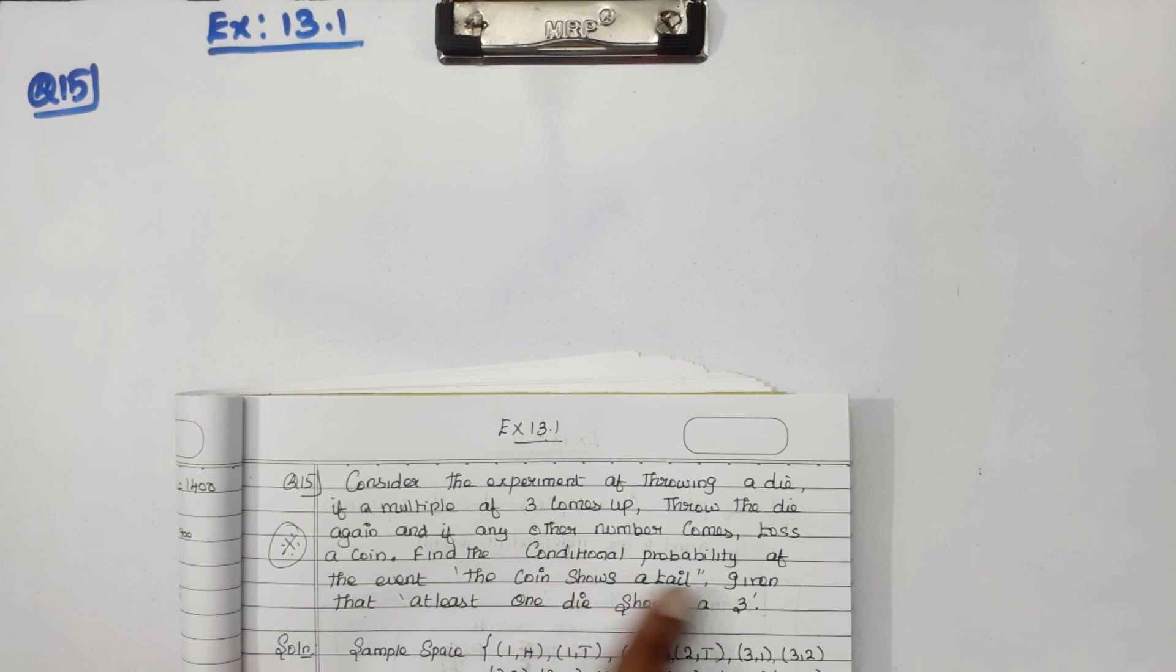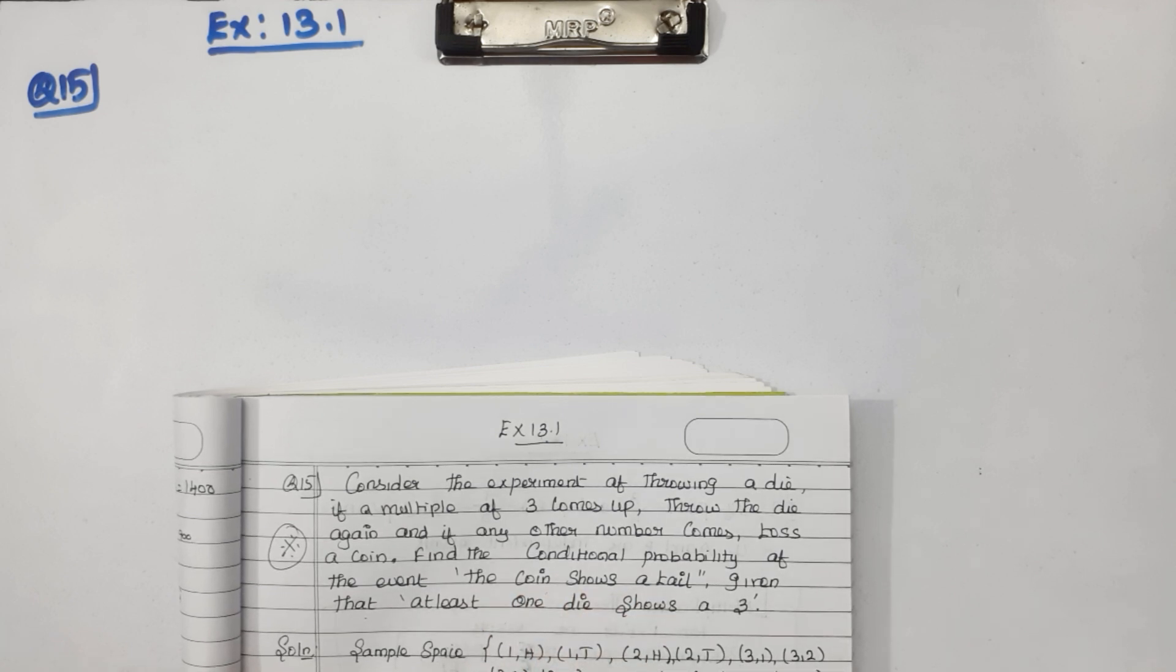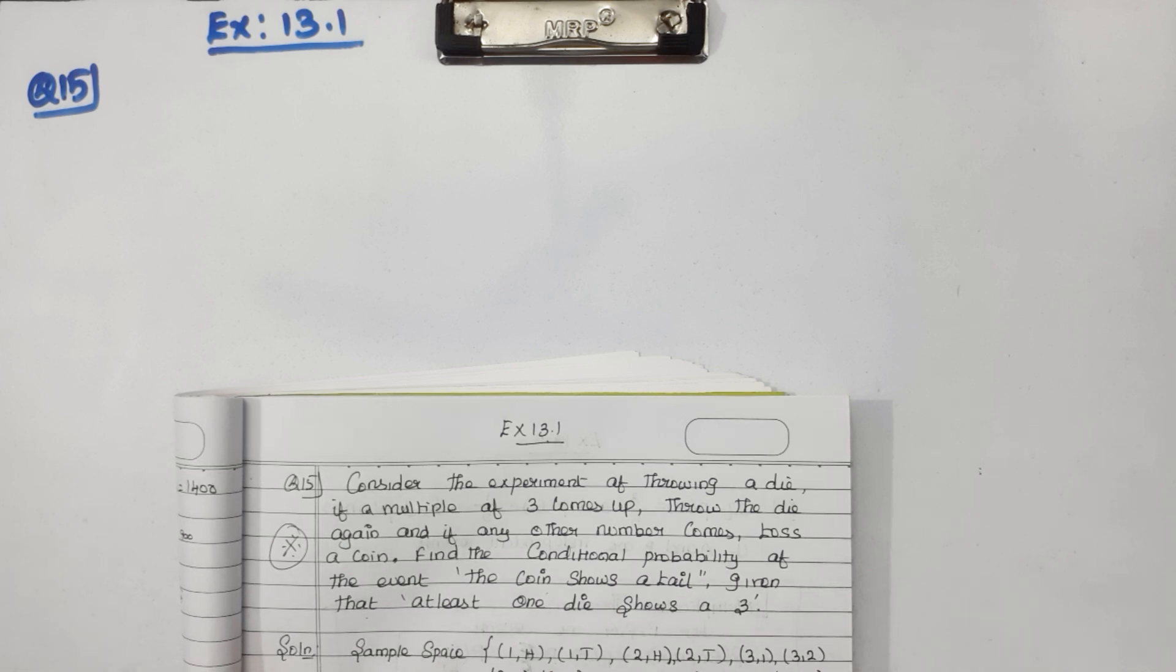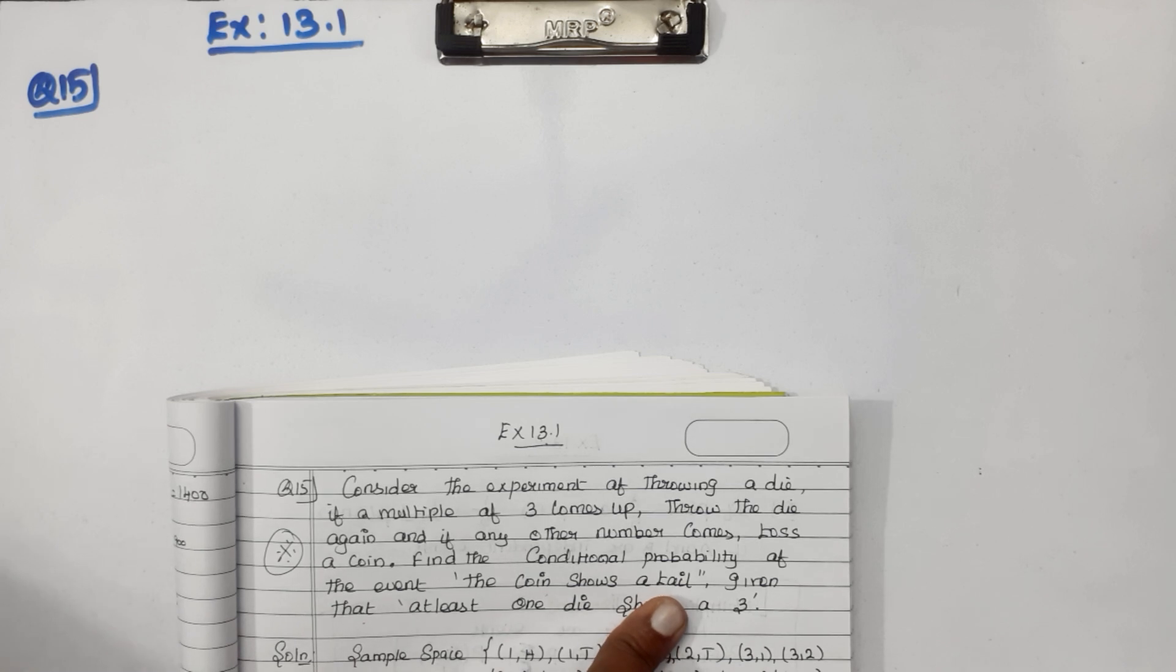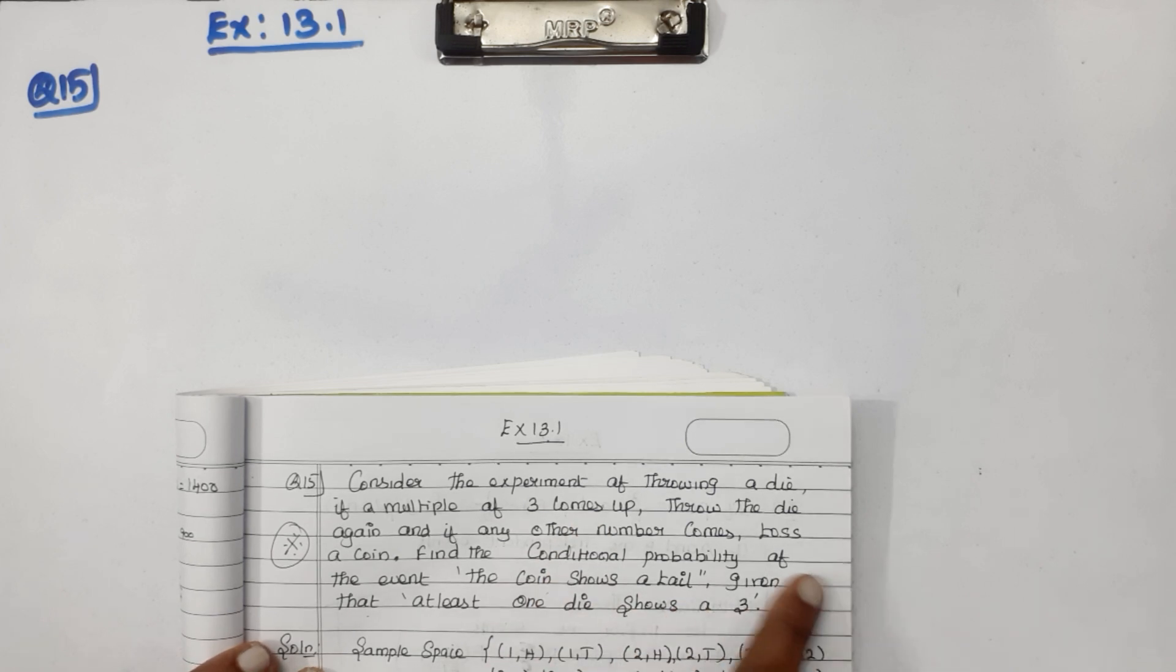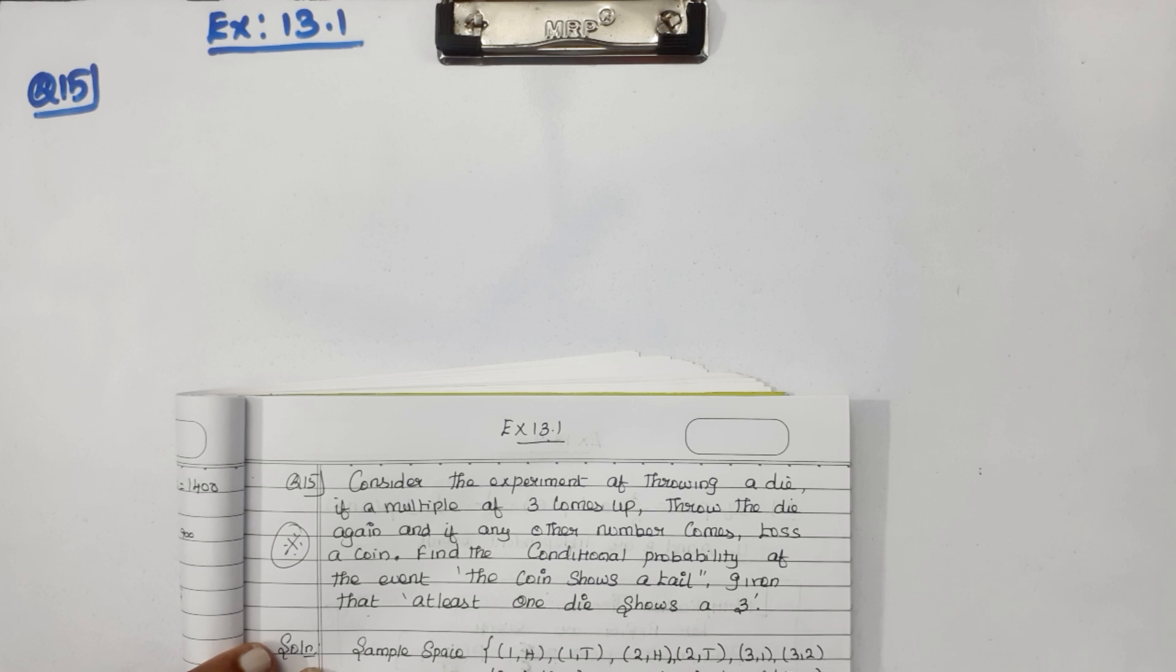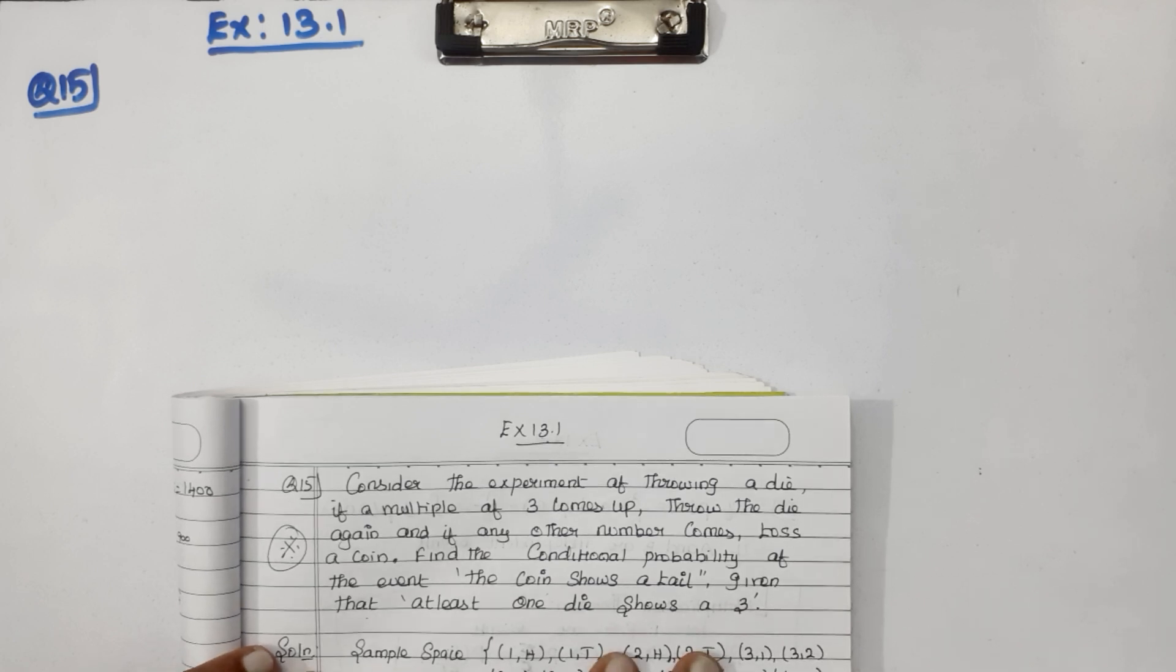Find the conditional probability of the event: the coin shows a tail, given that at least one die shows a 3. If you throw 3 or 6, you throw the die again. If 1, 2, 4, or 5, you toss a coin.